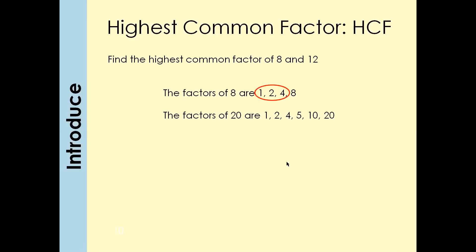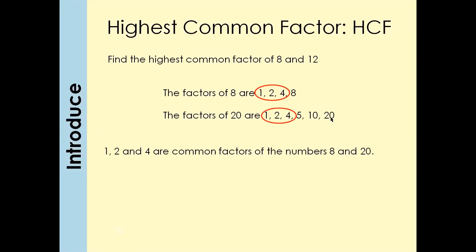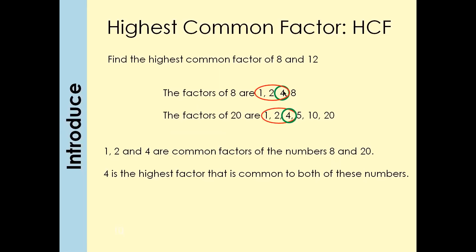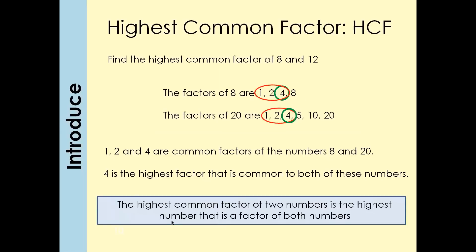We need to find out what are the common factors. 1 is common, 2 is common, 4 is common. The highest factor among all the common factors is 4, so the HCF of 8 and 12 is going to be 4. The highest common factor of two numbers is the highest number that is a factor of both numbers. So: find the factors, find the common factors, and find the highest common factor.